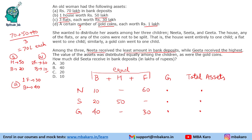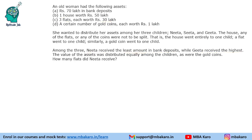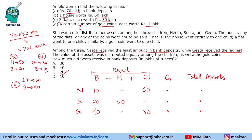The first question: how much did Sita receive in bank deposits? Sita received 20 lakhs in bank deposits. Next question: how many flats did Nita receive? Nita received 2 flats.